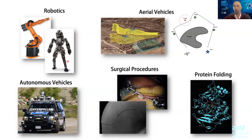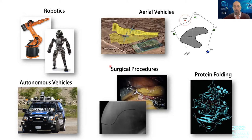Autonomous vehicles, of course. You can have aerial vehicles moving in an environment while avoiding obstacles. Some of these applications are obvious; some are less obvious. For example, you have surgical procedures where you want to move the needle inside the tissue. This turns out to be a planning problem.